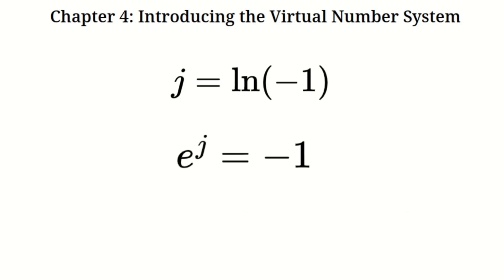What's so special about this? Well, it shifts the focus from square roots to logarithms and exponentials, which are inherently more consistent. In this system, a virtual number is written as a plus b times j, where a and b are real numbers. The beauty of this system is that it avoids contradictions. There's no ambiguity in e raised to the power of j equals negative one, and we can derive everything else from there.